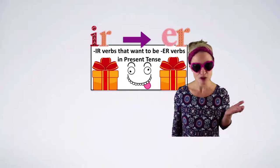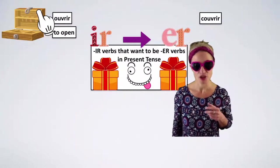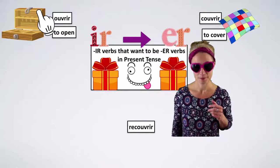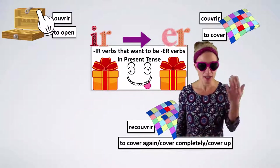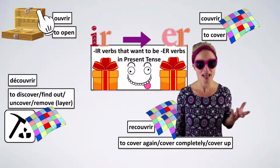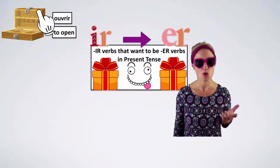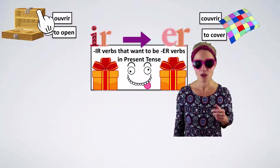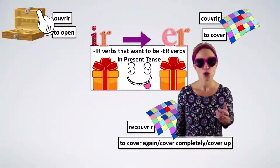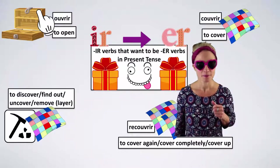Let's look at this group of verbs — the IR verbs that want to be ER verbs. Ouvrir means to open. Couvrir — which is just ouvrir with a C at the beginning — means to cover. Recouvrir means to cover again, to cover completely, or to cover up. Découvrir means to discover, to find out, to uncover, or to remove a layer like a layer of clothing.